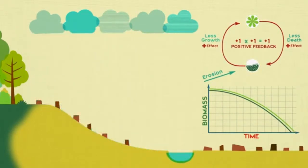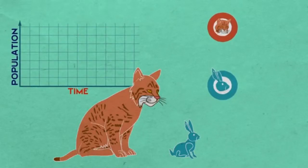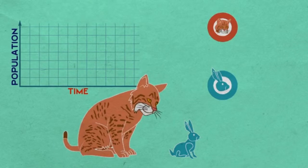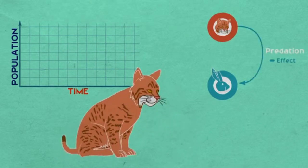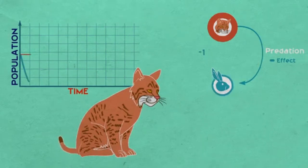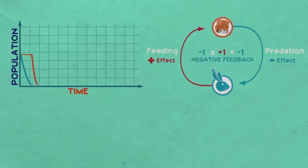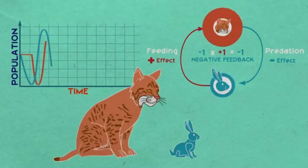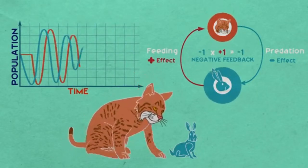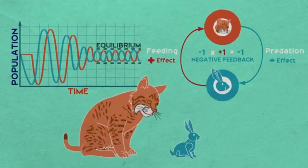In contrast, negative feedback diminishes or counteracts changes in an ecosystem to maintain a more stable balance. Consider predators and their prey. When lynx eat snowshoe hares, they reduce their population, but this drop in the lynx's food source will soon cause their own population to decline, reducing the predation rate and allowing the hare population to increase again. The ongoing cycle creates an up and down wave-like pattern, maintaining a long-term equilibrium and allowing a food chain to persist over time.